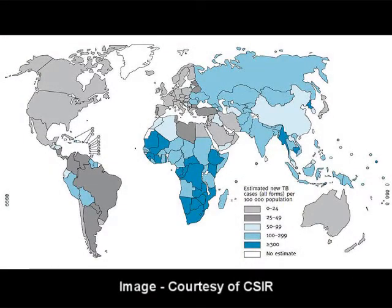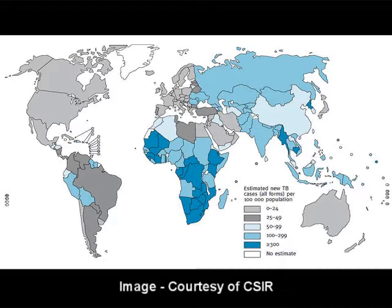Here's a chart of the world highlighting the new cases of TB reported per hundred thousand people per country. You can see a very small number of cases in North America and Europe. It increases in South America, but the problem lies mainly in Russia, Asian countries, and South Africa, which sits with greater than 300 cases — one of the highest rates of TB.